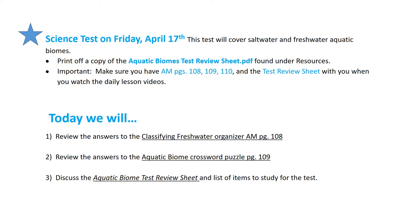So you're going to need to do two things this week. You're going to need to print off a copy of the aquatic biomes test review sheet, and secondly make sure you have activity manual pages 108, 109, 110, and the review sheet with you when you watch these daily lesson videos. For today we will review the answers to the classified freshwater biome organizer you completed last week. We will also review the answers to the aquatic crossword puzzle, and lastly we're going to look over the test review sheet and the list of items I'd like for you to review for the test.